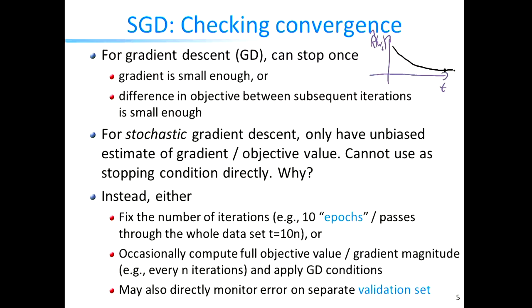This works for gradient descent, but for stochastic gradient descent the problem is that the sampled points give us unbiased but not exact estimates of the cost and gradient. Just looking at the magnitude of the gradient of the sampled mini-batch is not a good stopping condition — nor is looking at two subsequent losses evaluated only on the sampled points — because they can wildly oscillate. So checking termination is a little more tricky for stochastic gradient descent.